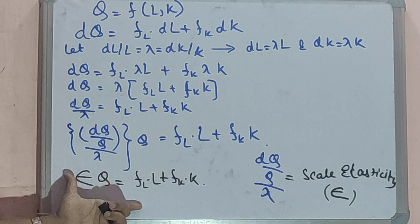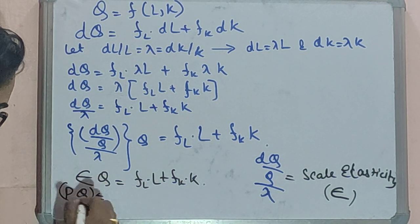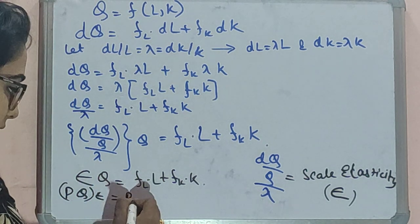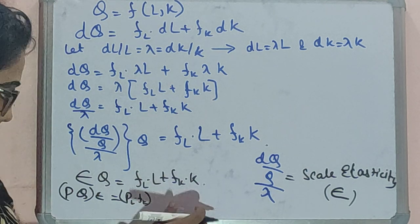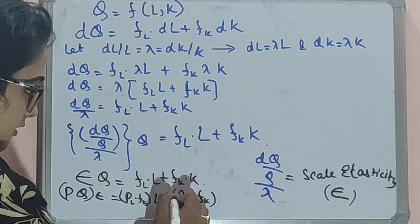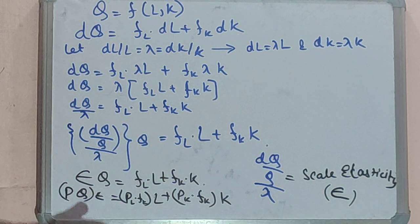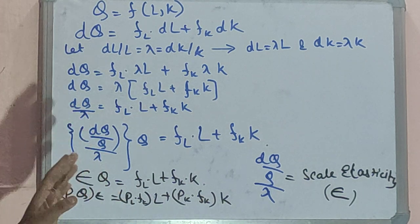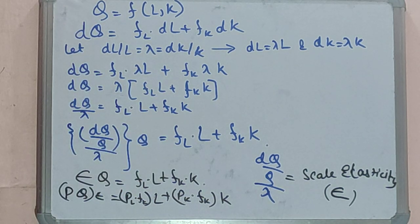From here we can write: P × Q × ε = PL·FL·L + PK·FK·K. This is the derivation of the product exhaustion theorem. Thus, paying each input the value of its marginal product, we see that the total value of the product is exhausted — we do not have any surplus or deficit left after paying each input their marginal product.